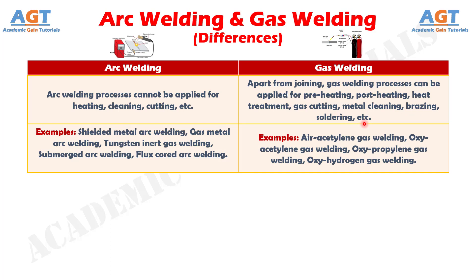Difference number 14. A few arc welding processes include shielded metal arc welding, gas metal arc welding, tungsten inert gas welding, submerged arc welding, and flux-cored arc welding. A few gas welding processes include air-acetylene gas welding, oxy-acetylene gas welding, oxy-propylene gas welding, and oxy-hydrogen gas welding.